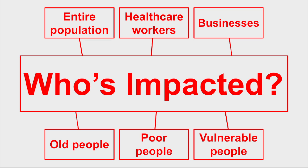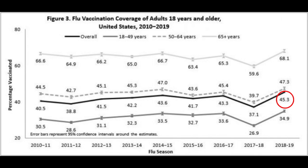Who is impacted by this market failure? Without vaccine programs sponsored by the government, the entire population would be at risk of several nasty contagious diseases. Others indirectly impacted include healthcare workers when large outbreaks occur, and businesses with absent employees and customers quarantining at home. Those impacted also include the elderly, the poor, and those with underlying conditions who cannot take a vaccine. Developing countries, including many in Africa, are profoundly impacted, with international bodies such as the World Health Organization and the Gates Foundation stepping in to support vaccine programs in place of government intervention.